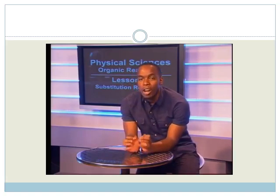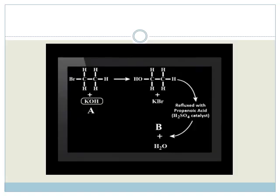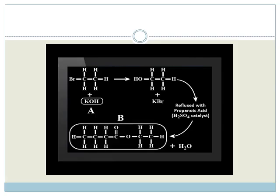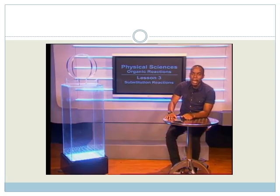Here's one more question on substitution. Identify the substances that are shown by the letters A and B in the diagram. Both of these reactions were substitution. Molecule A is potassium hydroxide and molecule B is ethyl propanoate.